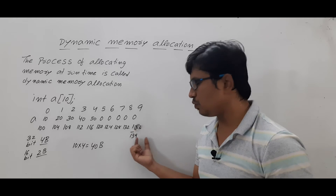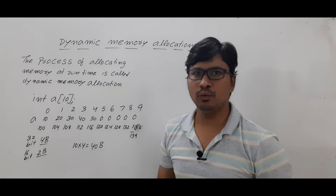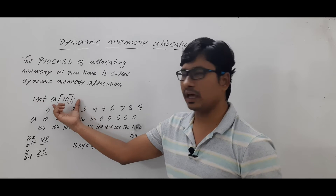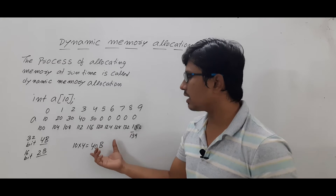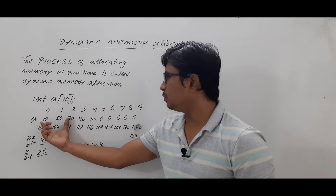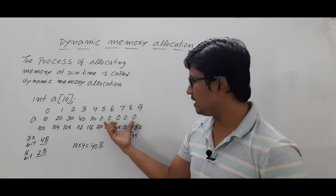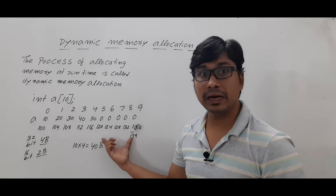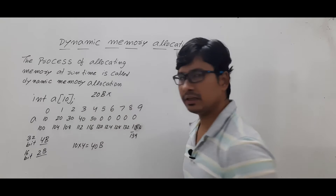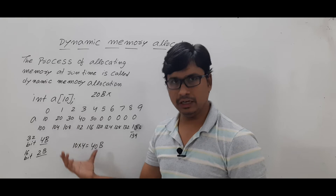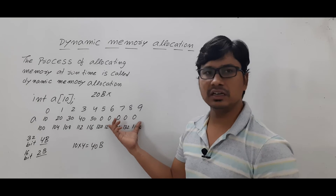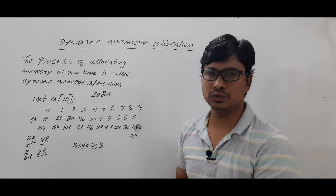Now, why I discussed arrays: if you create an integer array of size 10, during compilation you allocate 40 bytes of memory. Suppose you initialize only 5 elements — then the remaining 5 slots, which is 20 bytes of memory, are not utilized. You are wasting 20 bytes of memory. You want to store only 5 elements but you allocated for 10.